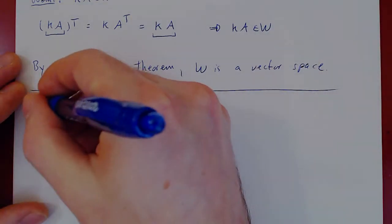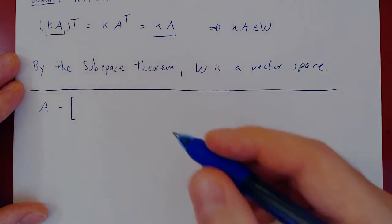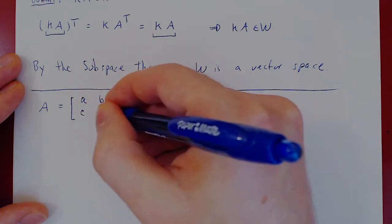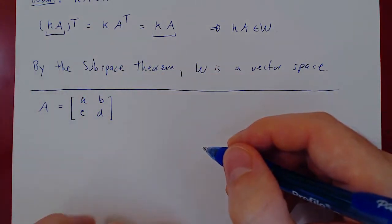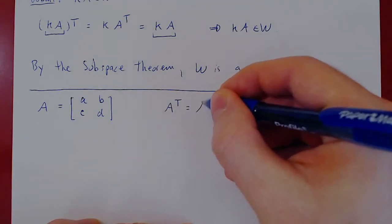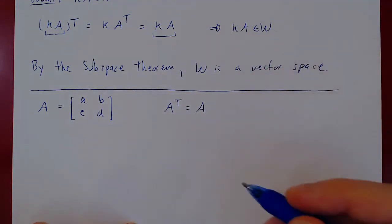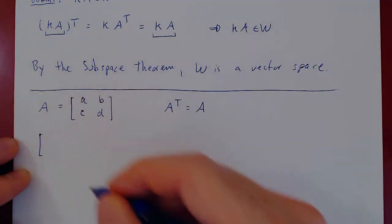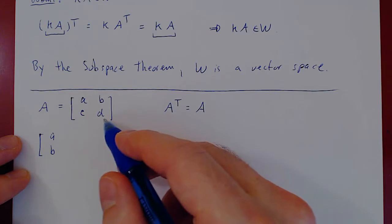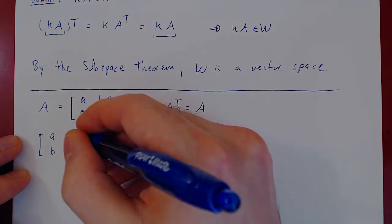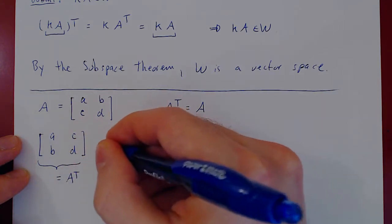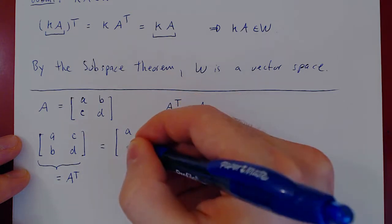Consider a matrix A that is 2 by 2 with unknown entries a, b, c, d. The matrix A is in the space W if it satisfies A transpose equals A. A transpose has first row of A as first column, so the entries become a, c in the first column and b, d in the second column.